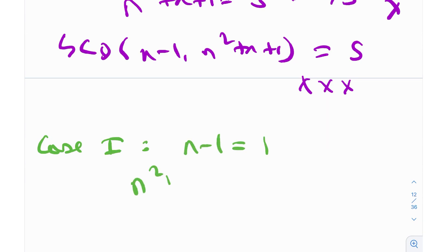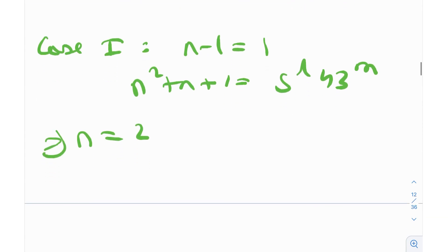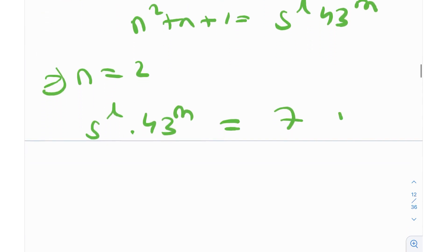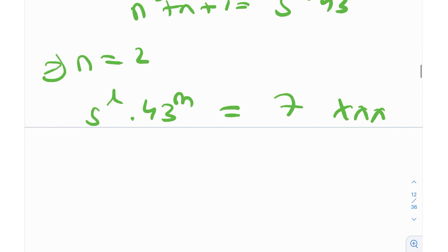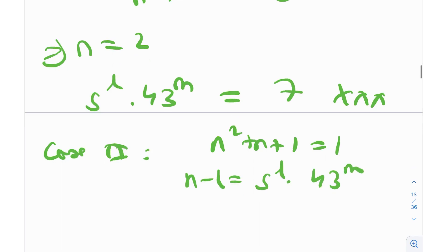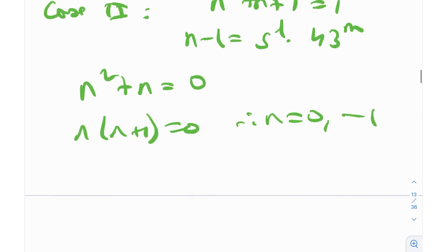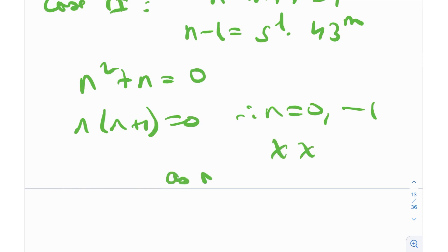Case 1: n−1 = 1 means n = 2, and then n²+n+1 = 7. But 7 = 5^l · 43^m has clearly no solution. Case 2: n²+n+1 = 1 means n(n+1) = 0, so n = 0 or n = −1. Since n is a natural number, there are no solutions in this case either.